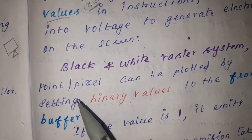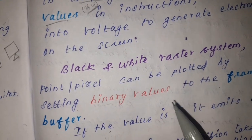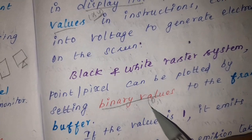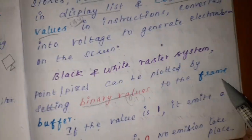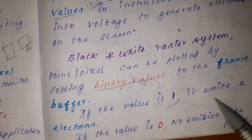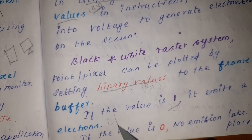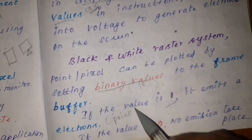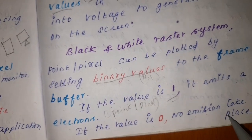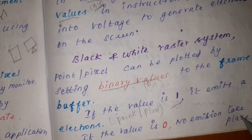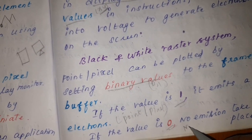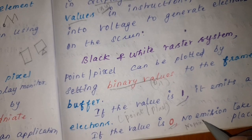In a black-and-white raster system, a point is represented by a binary value. In the frame buffer, if the value is 1, it emits an electron, generating a point or pixel. If the value is 0, no emission takes place, so no point or pixel is displayed.